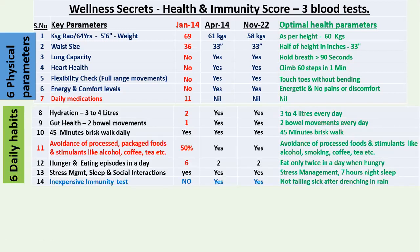The six daily habits: hydration — three to four liters of water must be consumed every day, because we lose water through stools, urine, breath, and sweat — at least one and a half liters daily. Gut health — two bowel movements per day is a must. Forty-five minutes of brisk walk is a must. Avoidance of processed, packaged food and stimulants like alcohol, coffee, and smoking.